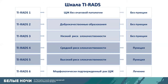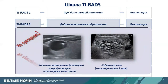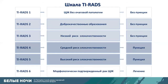T-RADS 2 covers benign nodes — we do not puncture them. These are mostly colloid nodes. The first type is not truly a node; it is a cyst expanding a follicle or a macrofollicle. The second type is so-called spongy nodes with multiple cavities divided by thin membranes — when compressed, the sponge emits liquid. We do not puncture these.